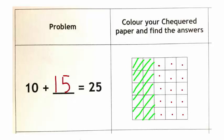And I note the number of unshaded squares. Hence I know 10 plus 15 is equal to 25.